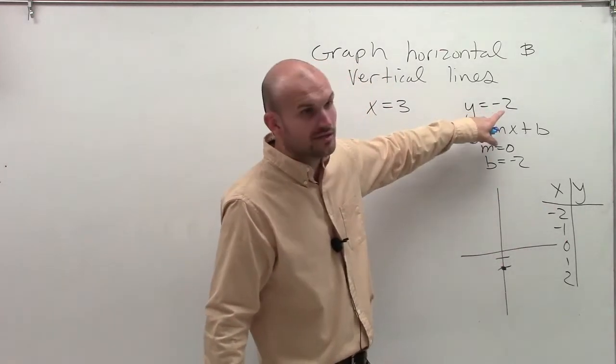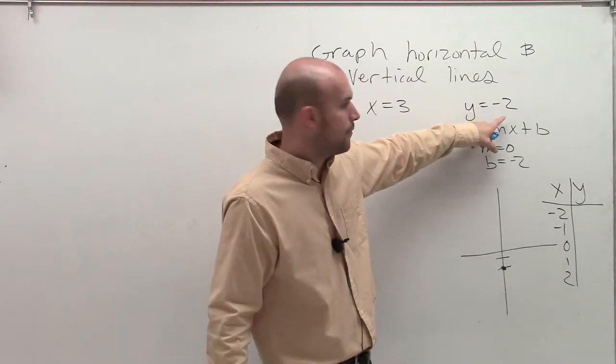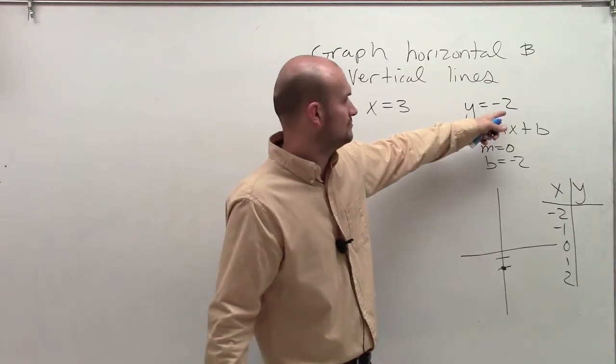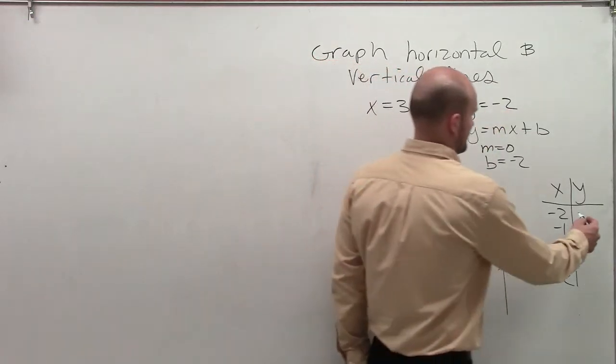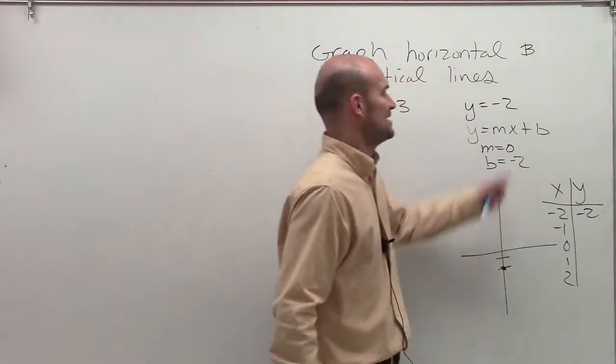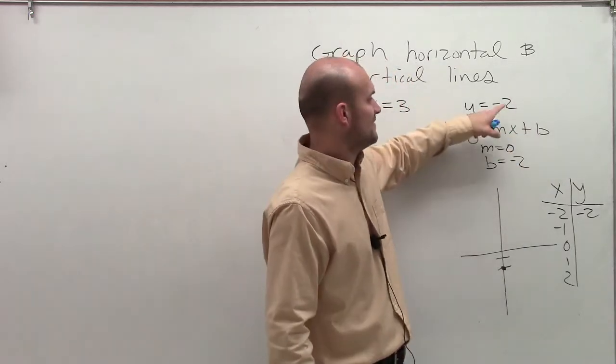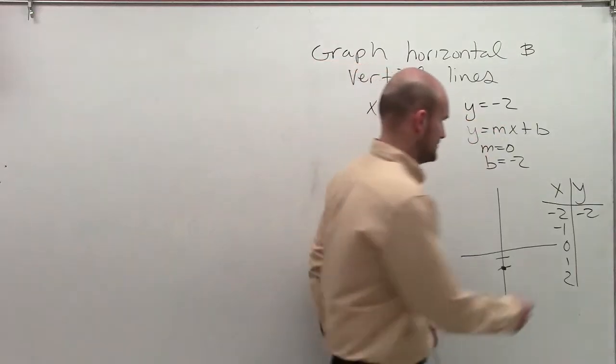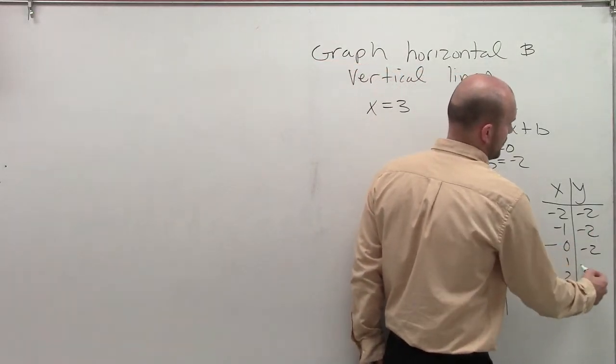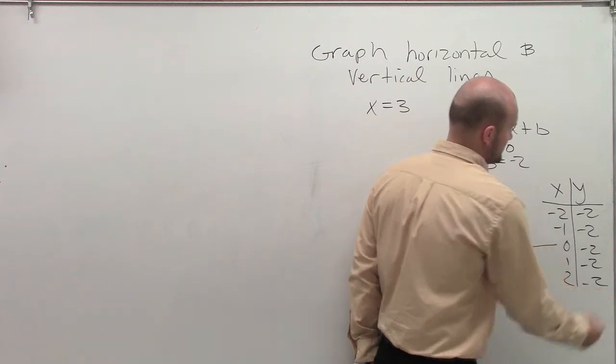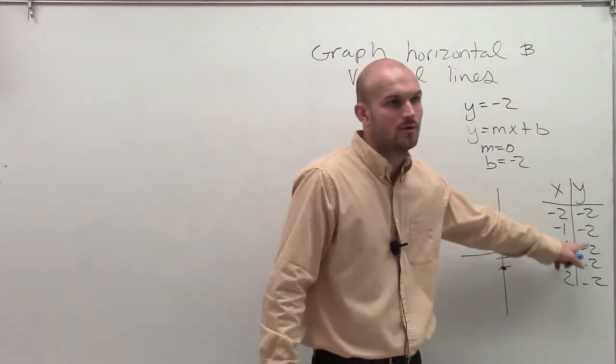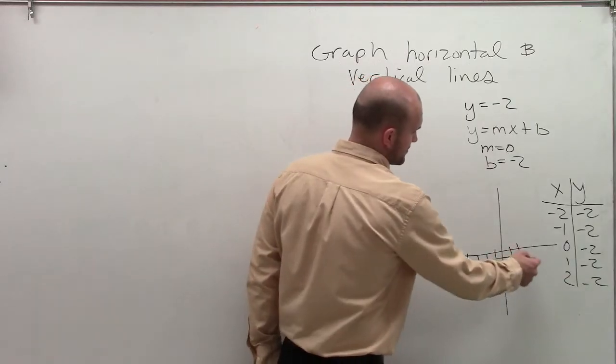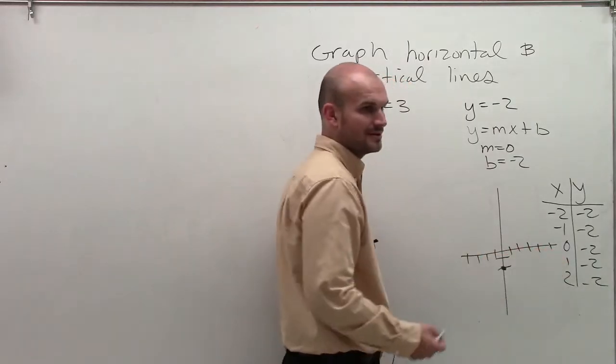So in this equation, let's say x equals negative two. What is the value of y? Negative two, because you're not plugging x in for anything. What about if x equals negative one? Negative two. Zero, negative two. One, negative two. Two, negative two. So all the time, y always equals negative two. That means for every one of these values, y always equals negative two.